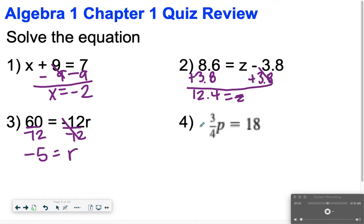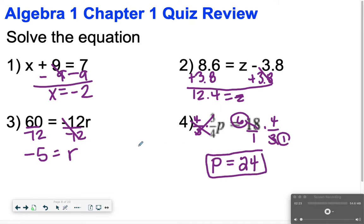Number 4, you're supposed to divide by 3 fourths to cancel out the multiplying by 3 fourths. But dividing by 3 fourths is the same thing as multiplying by its reciprocal 4 thirds. So I'm going to multiply by 4 thirds on both sides. These will cancel out. So I'm just left with p. And then 18 times 4 thirds. I'm going to cross cancel. 3 divided by 3 is 1. 18 divided by 3 is 6. So 6 times 4 is 24.